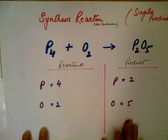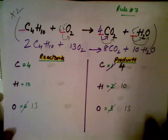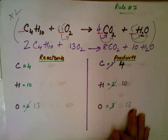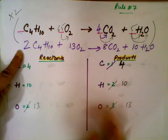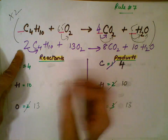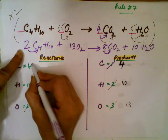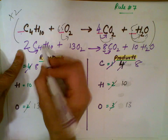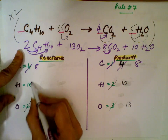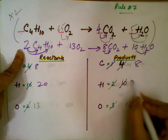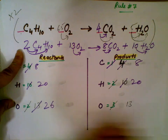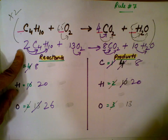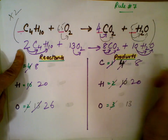Let me double-check. 2 times 4 is 8 carbon on the left, and 8 carbon on the right. Hydrogen: 2 times 10 is 20 on the left, and 10 times 2 is 20 on the right. Oxygen: 13 times 2 is 26. On the right side, 8 times 2 is 16, and 10 times 1 is 10, so 16 plus 10 is 26. Everything checks out: 8, 8; 20, 20; 26, 26. Always double check that it is balanced.